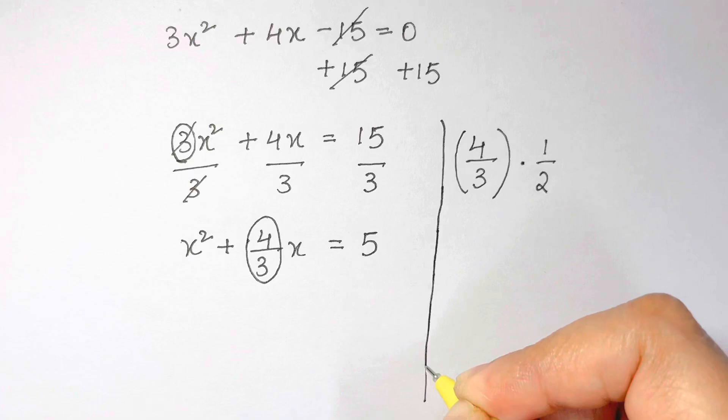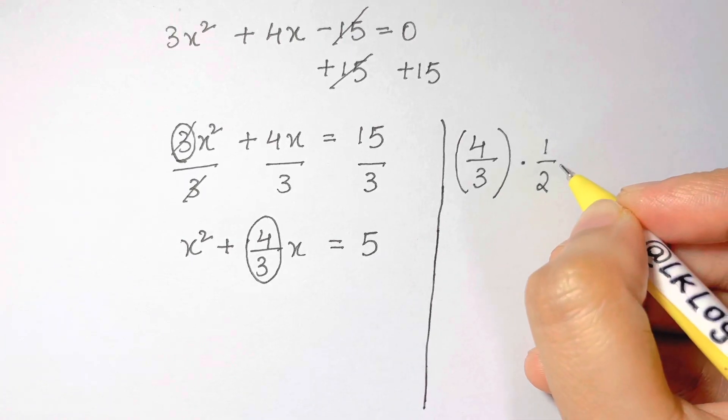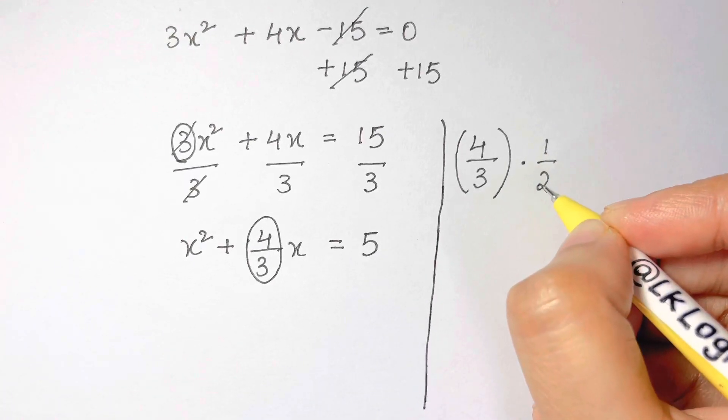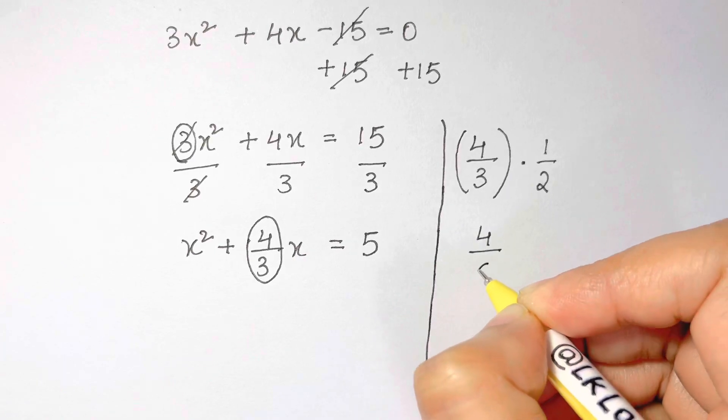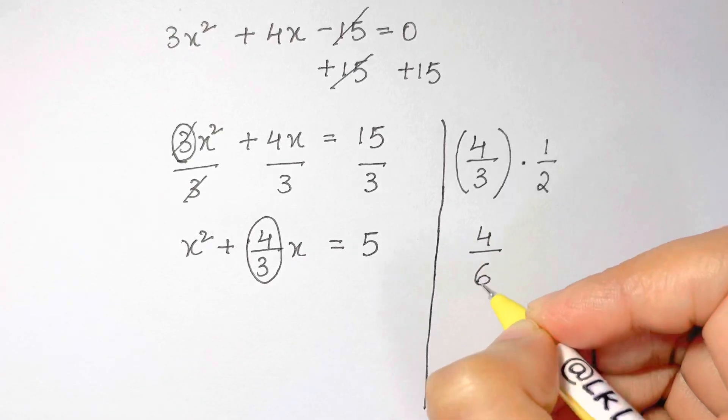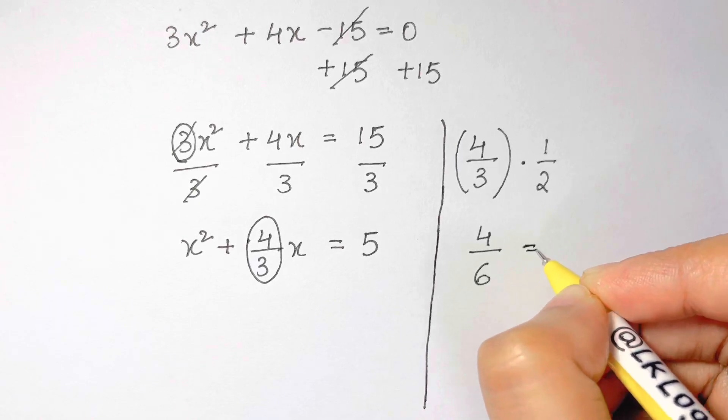4/3 times 1/2 equals 4 times 1 is 4, 3 times 2 is 6, so 4/6. I want you to reduce this fraction. That turns out to be 2/3.